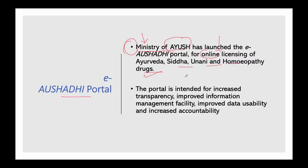Online licenses will be given to manufacturers and producers. This portal is intended for increased transparency related to the drugs of the AYUSH department, improved information management, improved data usability, and increased accountability. For example, if you need a herbal drug or a homeopathic drug and you don't have proper information about which company to go to, such information will be made transparent through this portal.